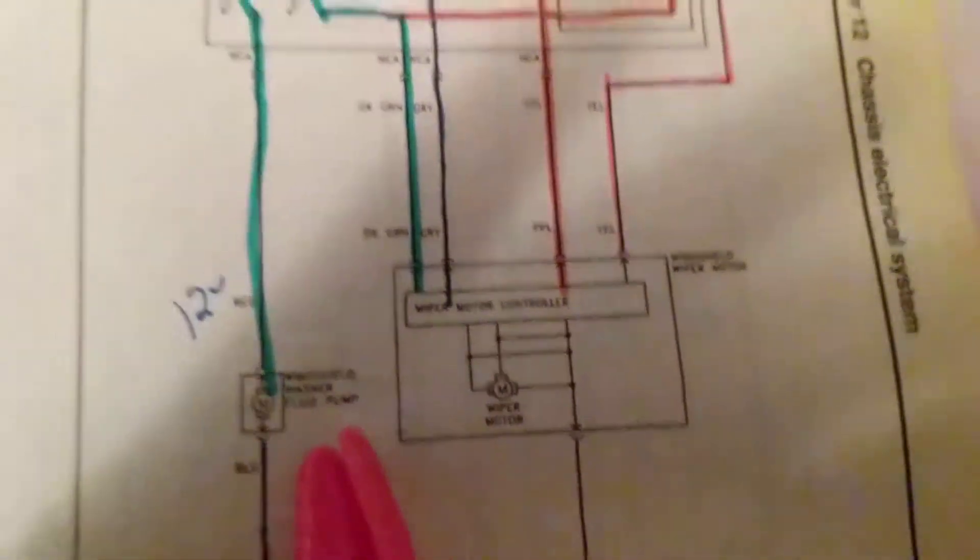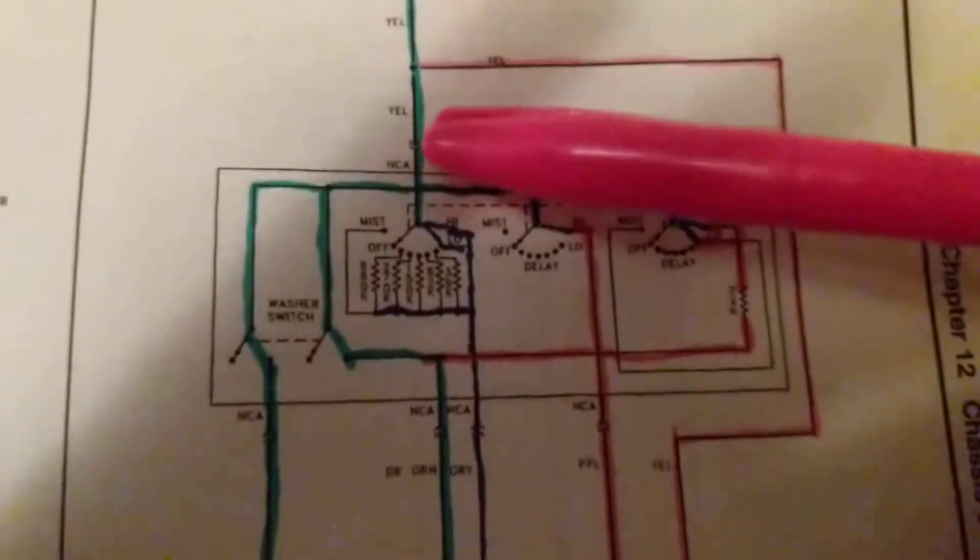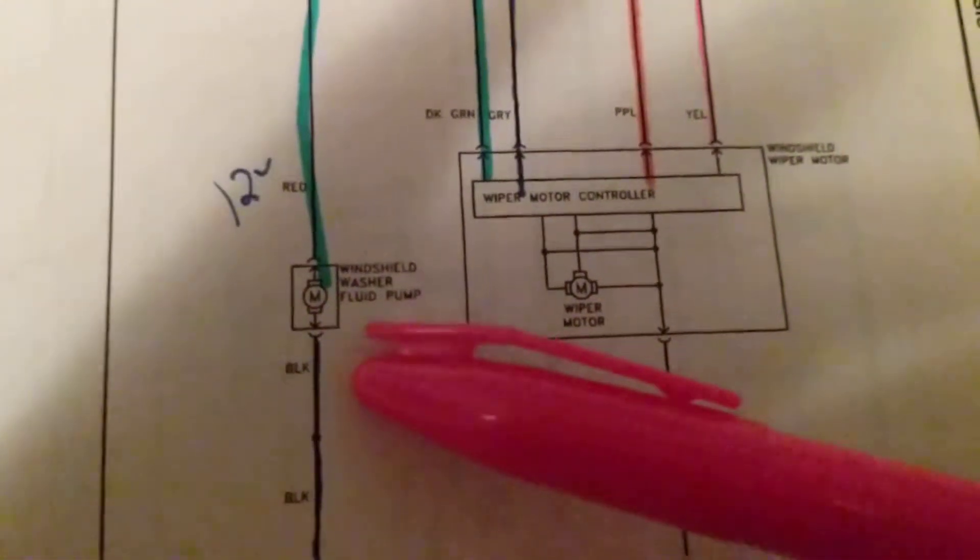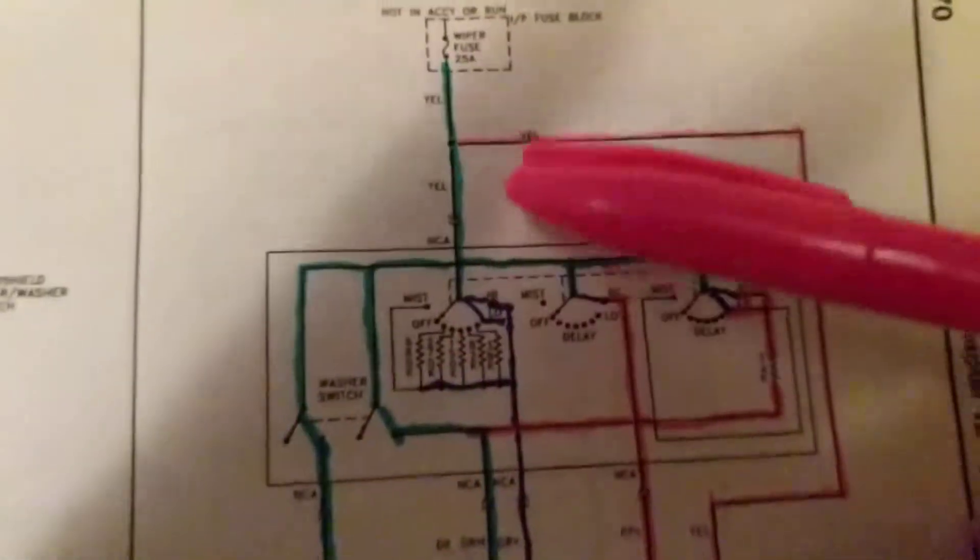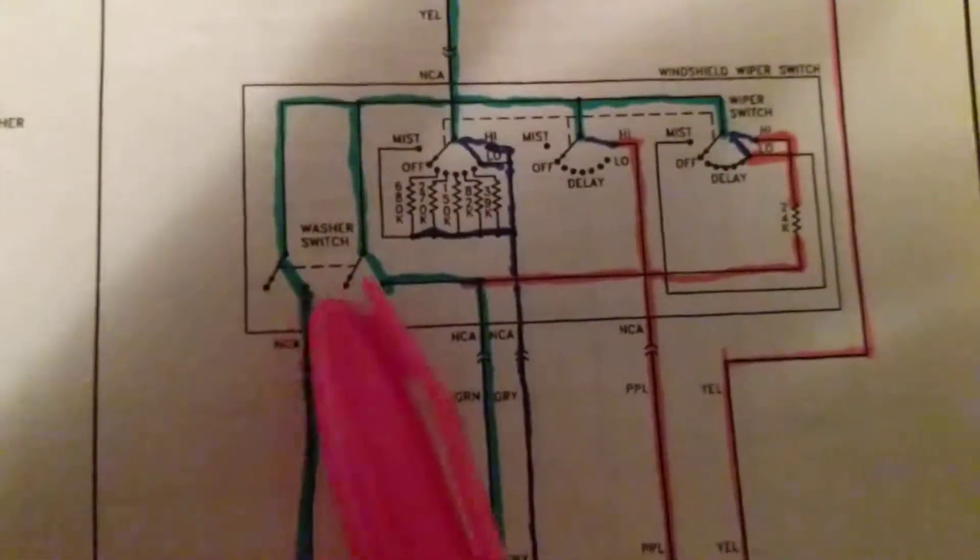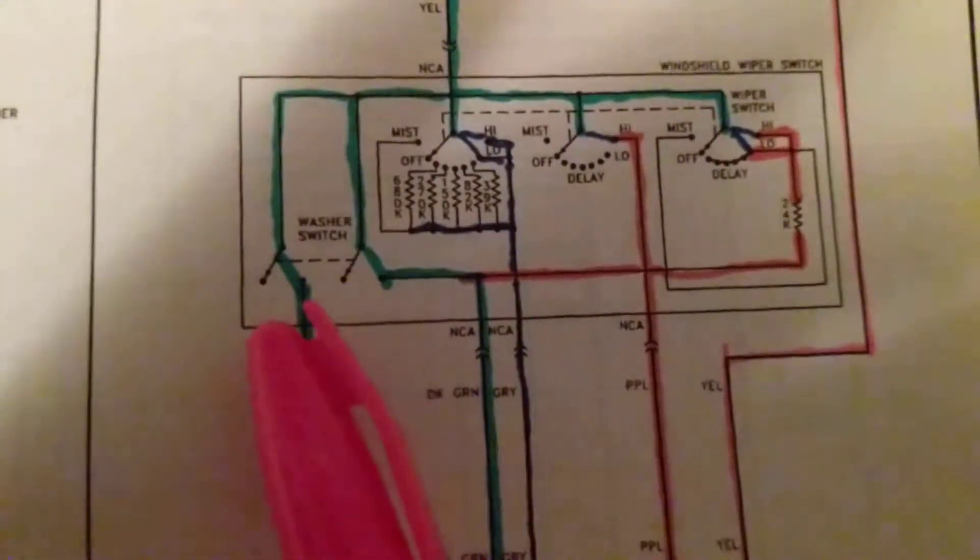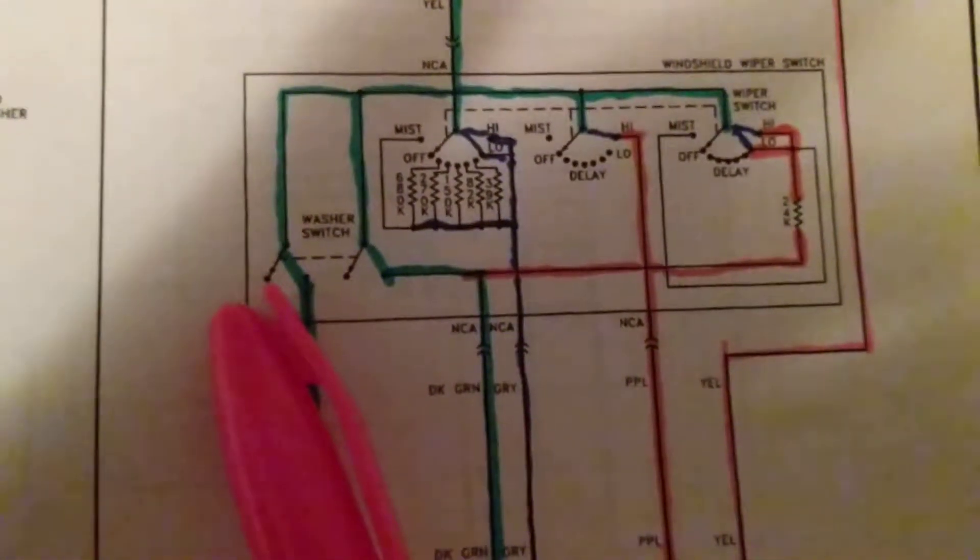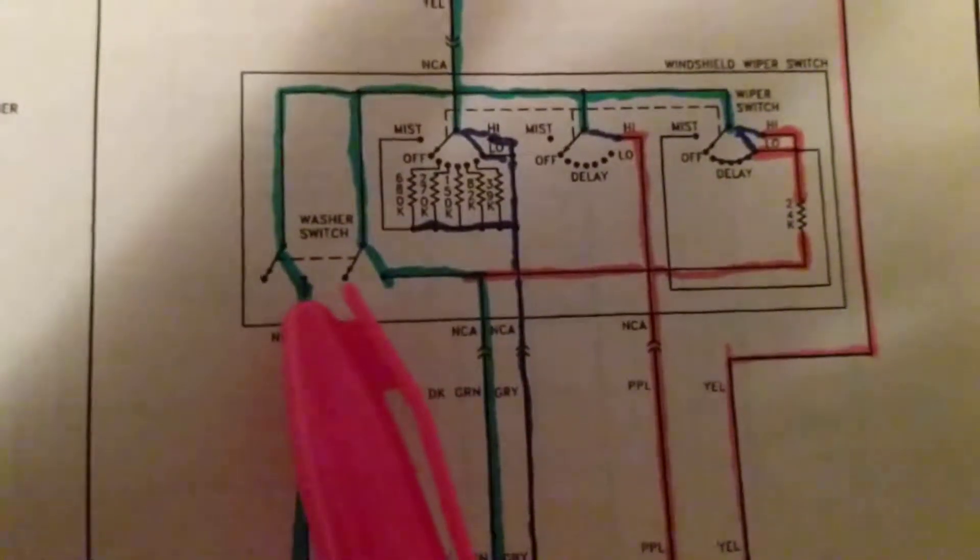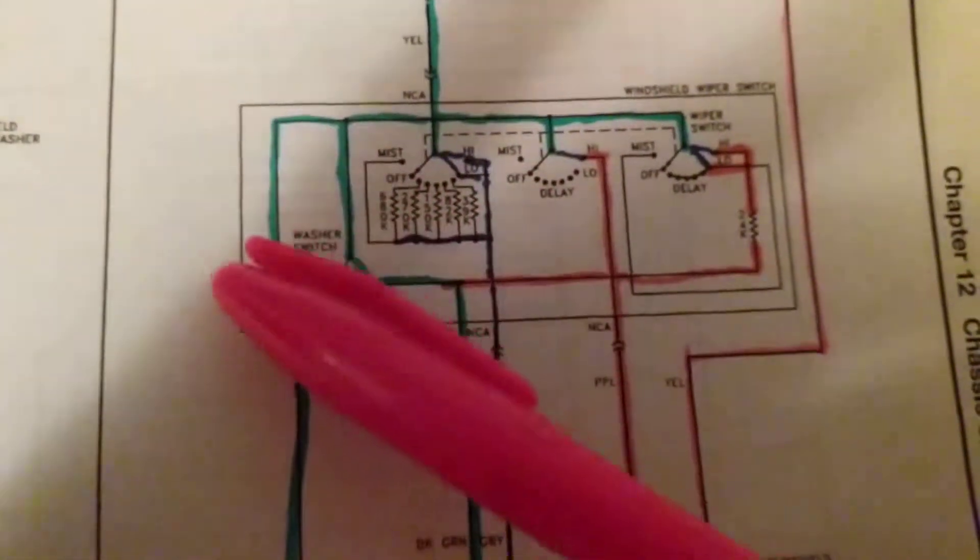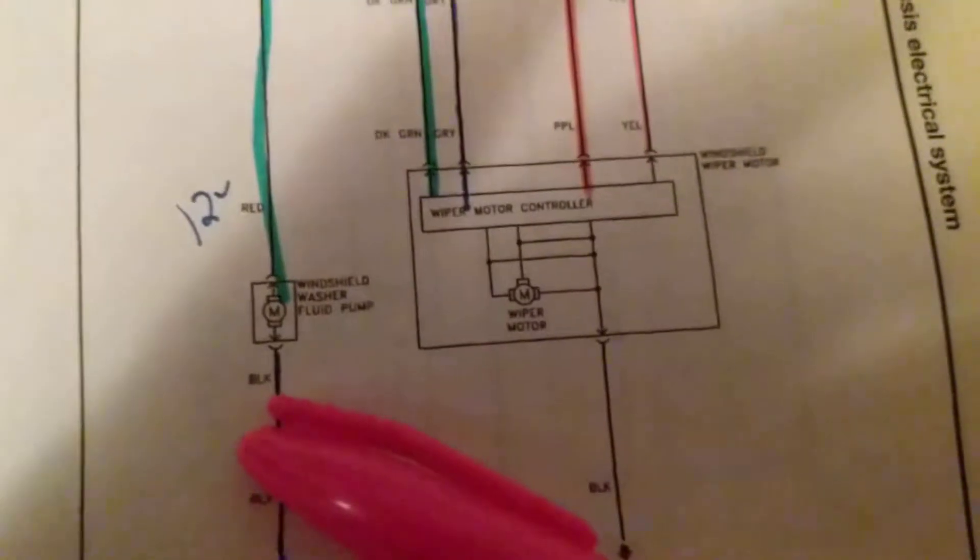Now if you notice, we have a washer fluid pump, a motor. When you want to wash the windows, you need fluid and you have a pump to deliver that. So therefore, this is another ganged switch over here for the washer. You activate the switch, and when you activate the switch, this contact switch goes from this position to this position. Therefore, current can flow from here, here, here to the pump.